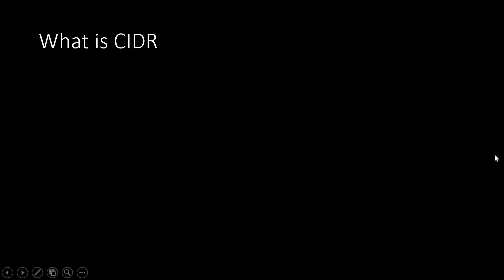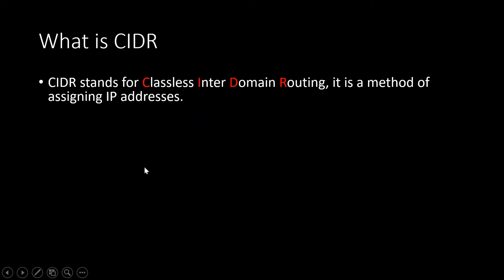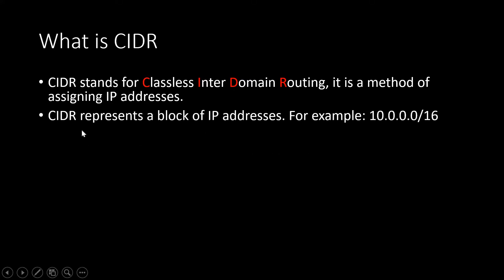In this video I will discuss CIDR in networking. CIDR stands for classless inter-domain routing. It is a method of assigning IP addresses in a network. CIDR represents a block of IP addresses. For example, you might have seen while creating your VPC or subnet you provide a CIDR block like 10.0.0.0/16. We will see what this means — what this last 16 means — in upcoming slides.